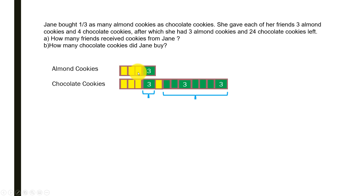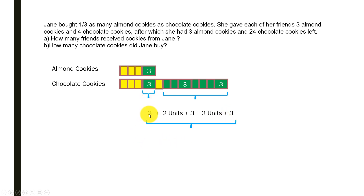For example, if she had five friends, five times three equals fifteen cookies given away plus three remaining. For chocolate cookies, the four units shaded in yellow represent what was given away, and what remains is three cookies here plus two units, three cookies plus three units, and three more. This total remaining chocolate is known to be 24 cookies, so the whole expression equals 24.